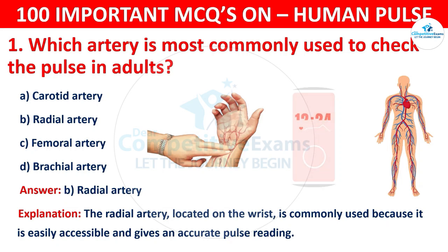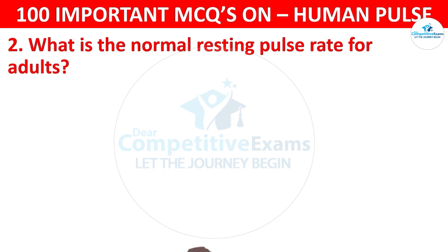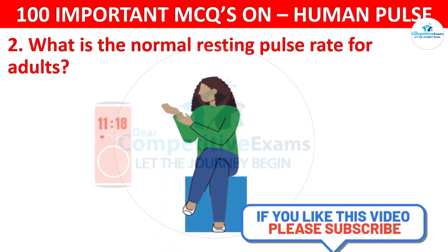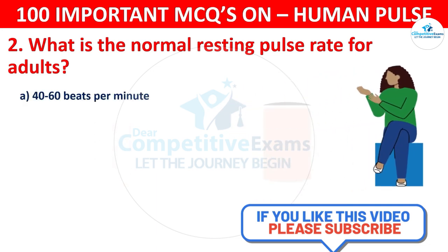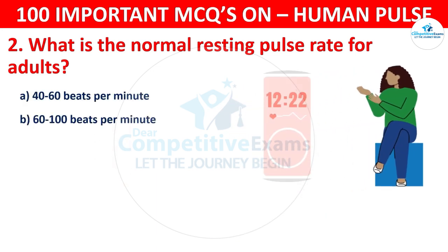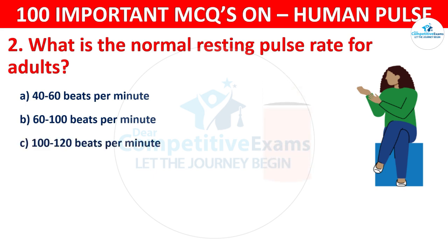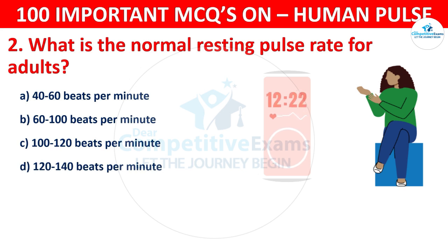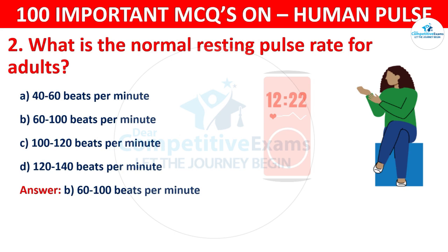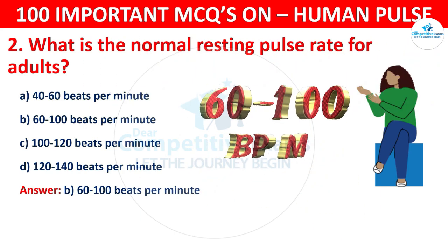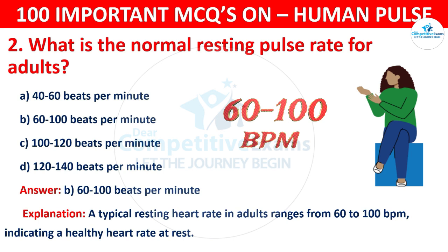Question number 2: What is the normal resting pulse rate for adults? The options are: 40 to 60 beats per minute, 60 to 100 beats per minute, 100 to 120 beats per minute, or 120 to 140 beats per minute. The correct answer is B, that is 60 to 100 beats per minute. A typical resting heart rate in adults ranges from 60 to 100 beats per minute, indicating a healthy heart rate at rest.